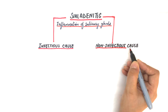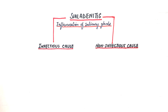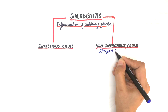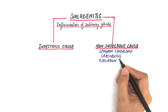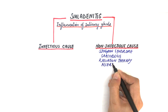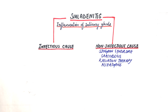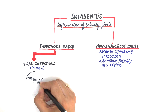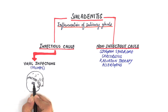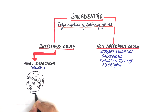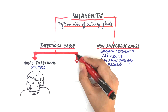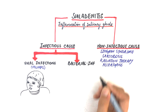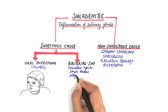The non-infectious causes of sialadenitis include Sjögren's syndrome, sarcoidosis, radiation therapy, and various allergens. The infectious cause may result either from a viral infection, seen in mumps, or from a bacterial infection, with the most common causative agents being Staph aureus and Strep pyogenes.